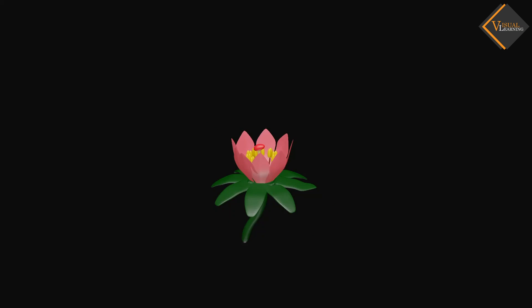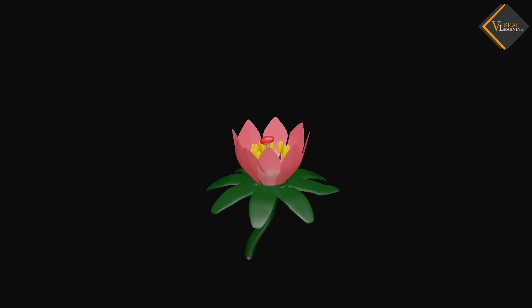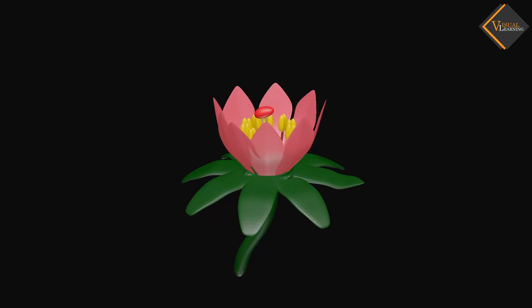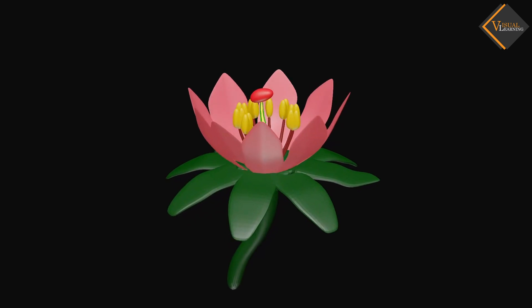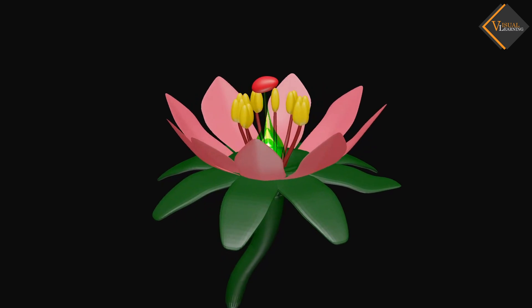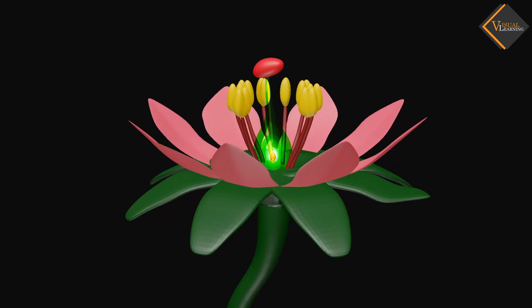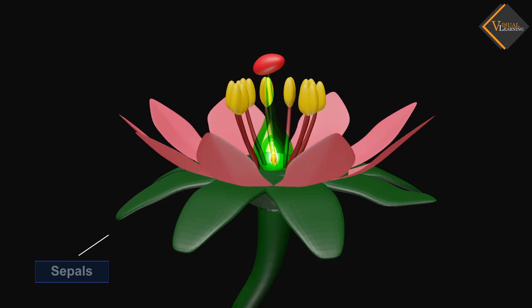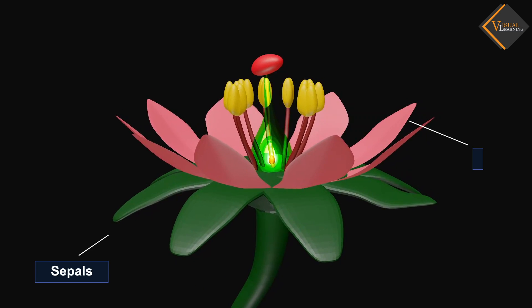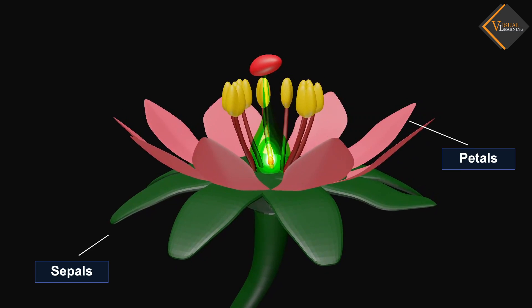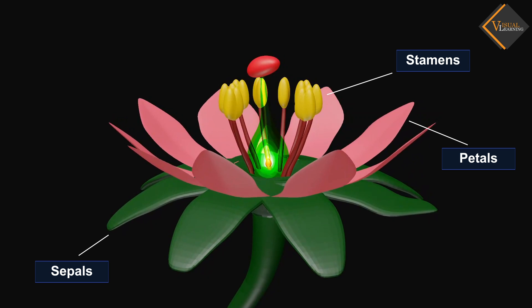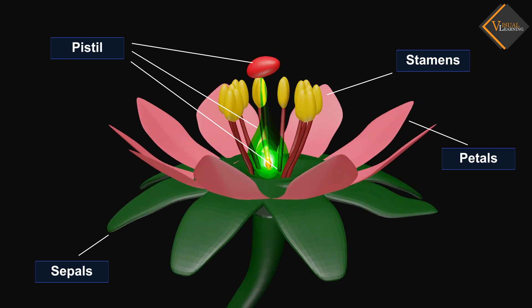The reproductive parts of angiosperms are located in the flower. You have already studied the different parts of a flower. These are sepals, petals, stamens, and pistil.